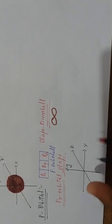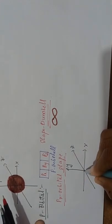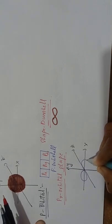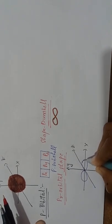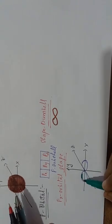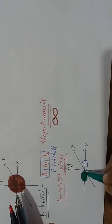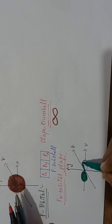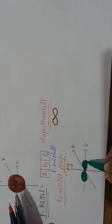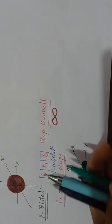Along the X axis, this is the dumbbell shape. This one is the PX orbital shape. Along the X axis, you have to take the dumbbell. So this is the PX orbital shape.